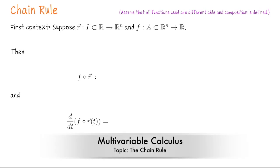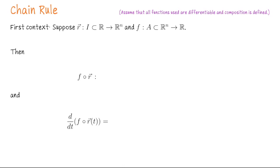In this video we're going to talk about the chain rule. The chain rule gives us a way to differentiate a composition of functions when the composition is defined. Throughout this lecture, assume the functions are differentiable, we have nice functions, and the composition is defined. For the examples we do, these two properties will be satisfied.